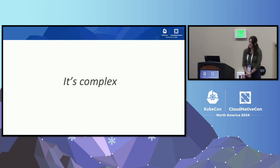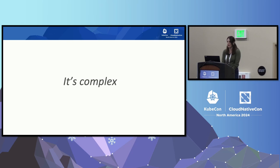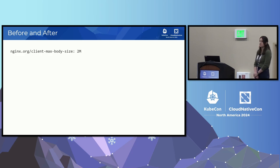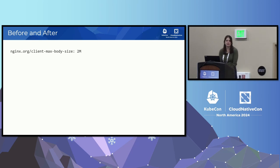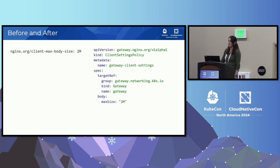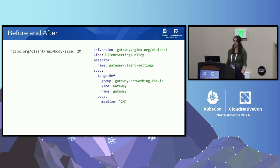First of all, it's complex. What I've shown you today is just a fraction of what's laid out in the GEP on policy attachment. Consider how you configure client max body size with the Ingress API and Nginx Ingress controller — it's just that: one line. Now consider how you do the same thing with the Gateway API policy attachment: it's certainly more text. It's also a completely different resource — a CRD. You need to know what target ref is, what happens when you target a gateway versus a route, and what happens if you target both. You need to understand the rules. It's complex.